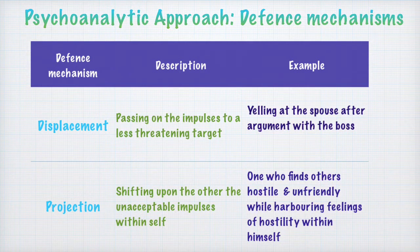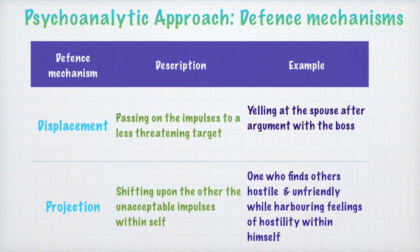Displacement is a defense mechanism which entails passing on the anxiety-provoking impulses to a less threatening target. A very good example of displacement is when you yell at your family members — either your sibling or your parents — after having an argument with your friend at school, or someone who yells at their spouse after an argument with the boss. What we do is choose a target for expression of our impulses that is a softer, less threatening target.